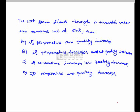Water steam flows through a throttle valve and remains wet at exit. Options: (A) temperature and quality increase; (B) temperature decreases but quality increases; (C) temperature increases but quality decreases; (D) temperature and quality decrease. Since wet steam flows through a throttle valve, it undergoes a constant enthalpy process.